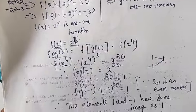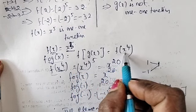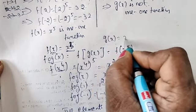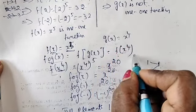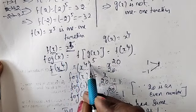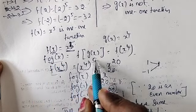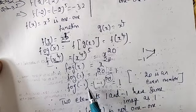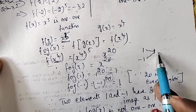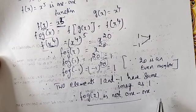For fog: f(g(x)) where g(x) = x^4. So f(x^4) with f(x) = x^5 gives (x^4)^5 = x^20. Since 20 is an even number, both 1 and -1 map to the same image 1. Therefore fog(x) is not a 1-to-1 function.